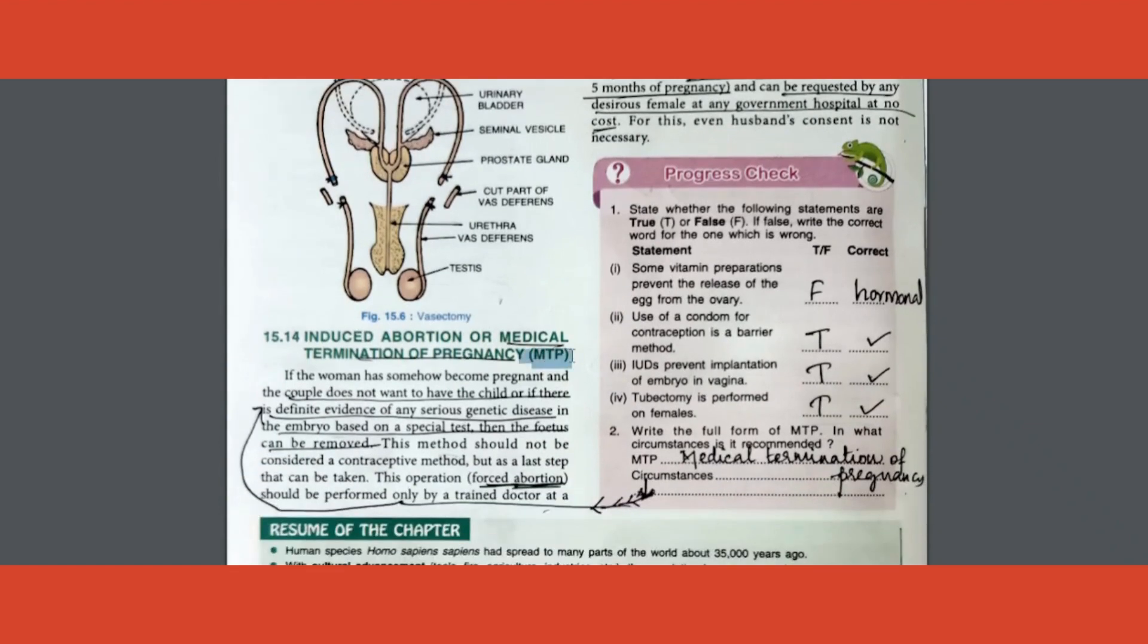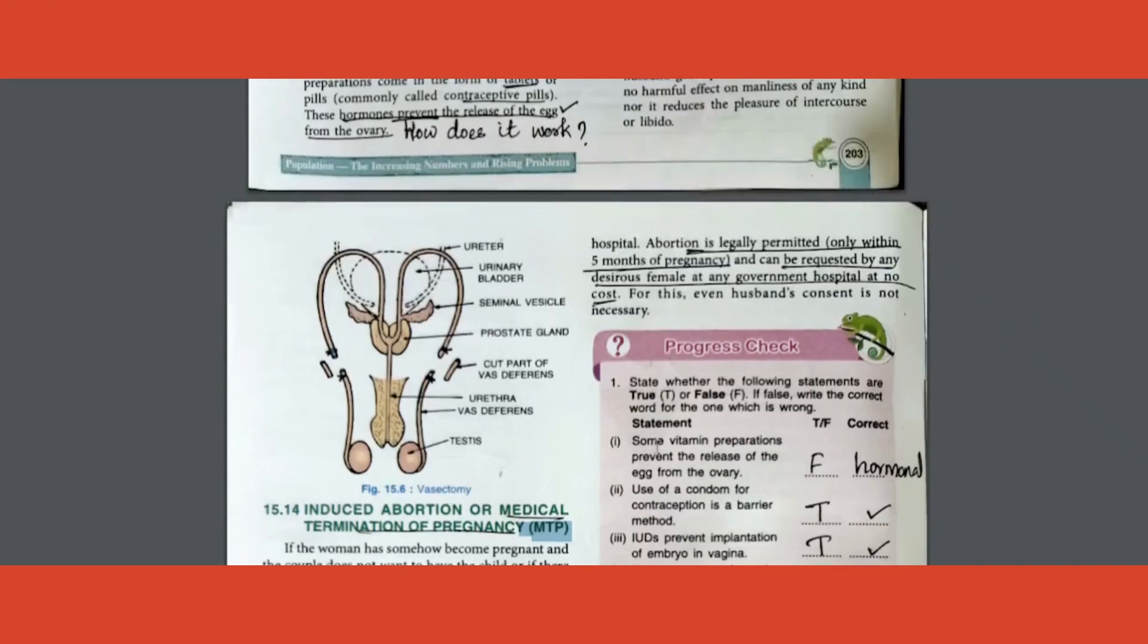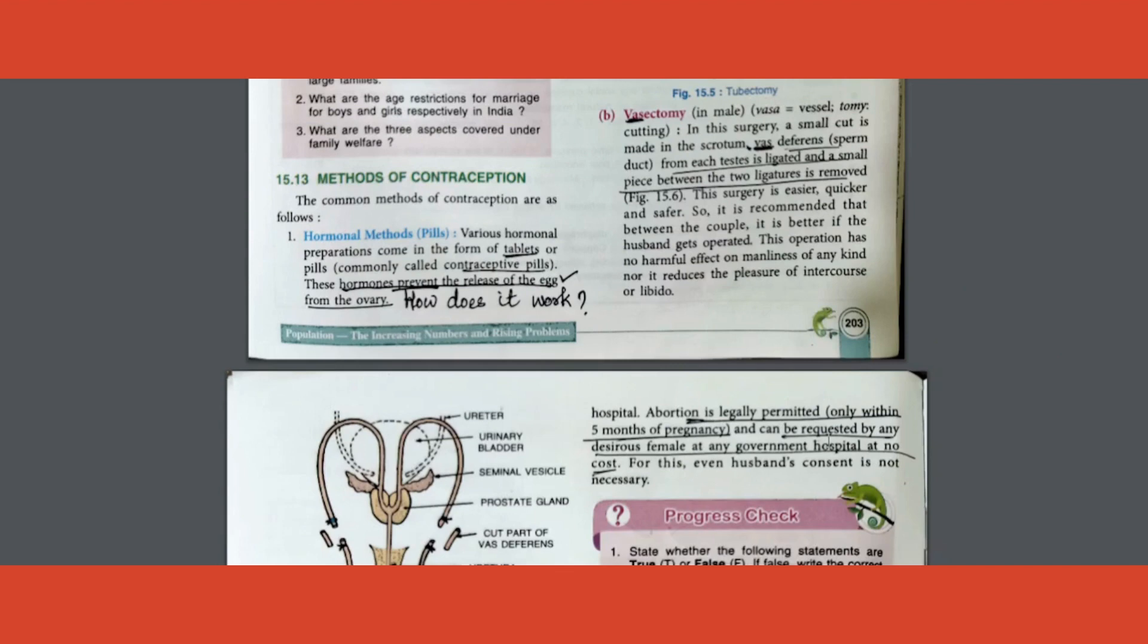Last part of the chapter is MTP. Expansion you can get: medical termination of pregnancy. Other words, you all know the word abortion. So abortion is in other words called as medical termination of pregnancy, MTP. Then when is it done? Circumstances under which it is done, read here. If the couple does not want to have children or definite evidence that there are serious genetic diseases, then using medical, with the help of a trained doctor, the pregnancy can be terminated. It is legally permitted within the first five months. Beyond that it is not.